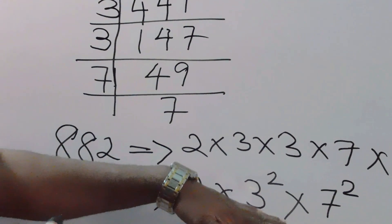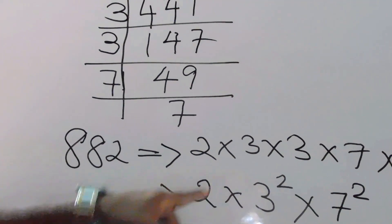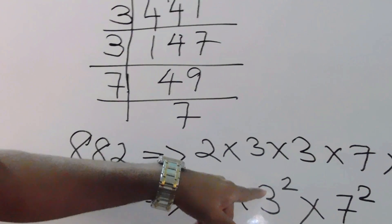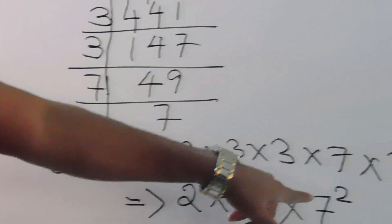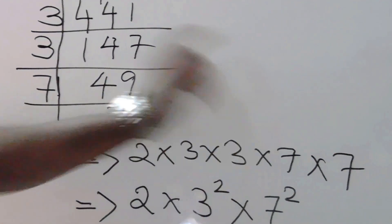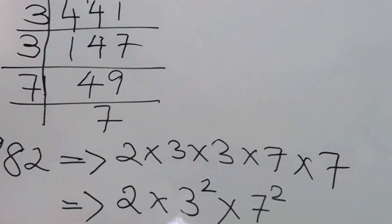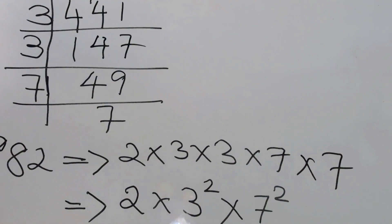This is how we get the answer: 882 equals 2 into 3 to the power 2 into 7 to the power 2. So this is how we can do question number 3.